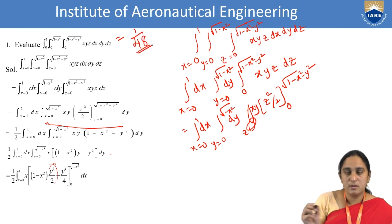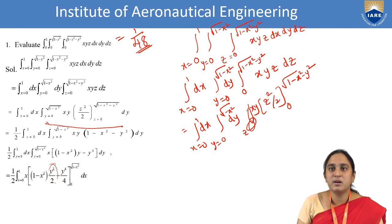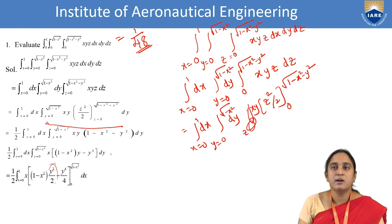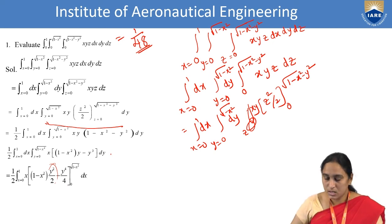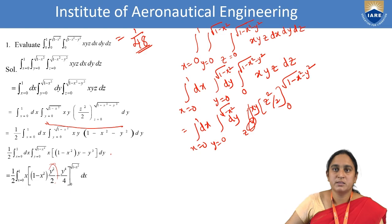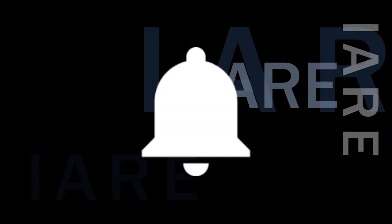This is the procedure for finding triple integration. For any given equation, depending on the limit values, first integrate with respect to z, then with respect to y, and then with respect to x. This is the general procedure for triple integral integration. Thank you — like, share, and subscribe, and hit the bell icon for more updates.